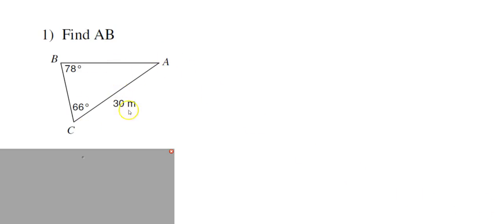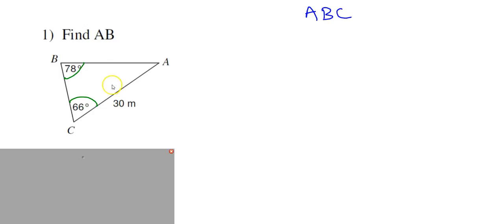Let us solve a problem using the Law of Sines. Here we have triangle ABC in which the measure of angle B is 78 degrees, the measure of angle C is 66 degrees, and you are asked to find the measure of side AB. The side opposite to angle C is lowercase c, which is the measure of AB, so I will use lowercase c for this.